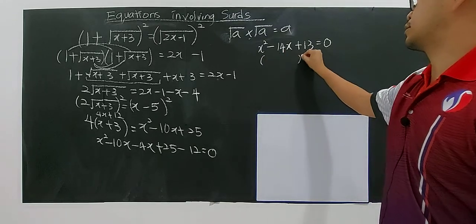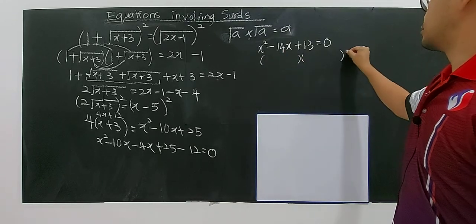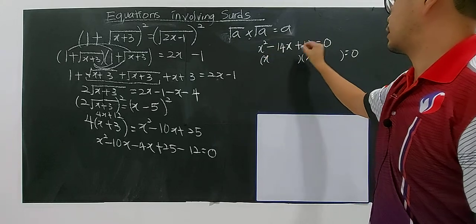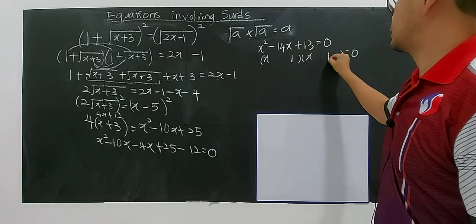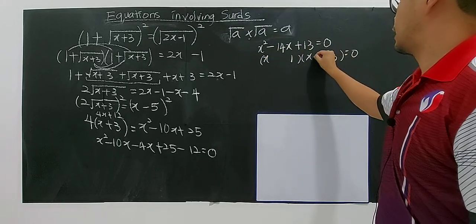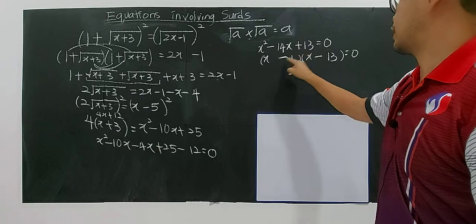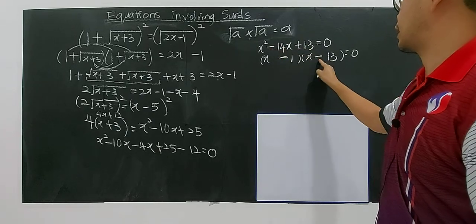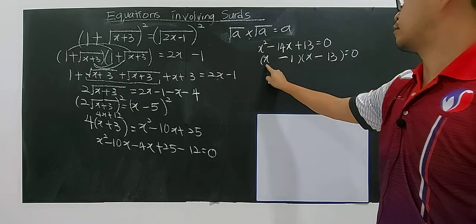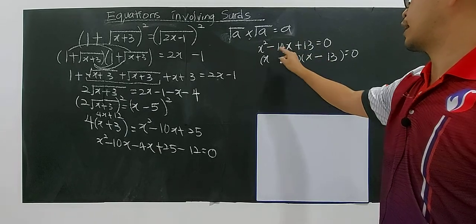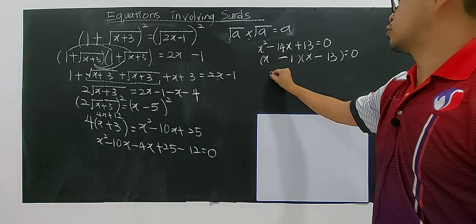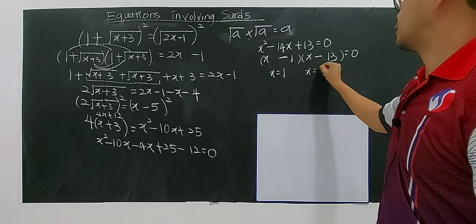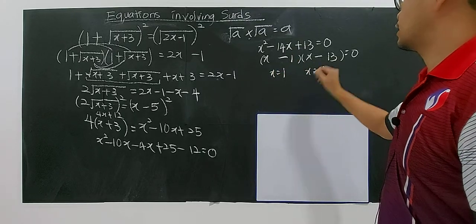Now factorize. x times x. The factors are 1 and 13. Because of negative here, you put negative, negative: negative 1 and negative 13 give negative 14. So you have 2 solutions: x equals to 1 and x equals to 13.